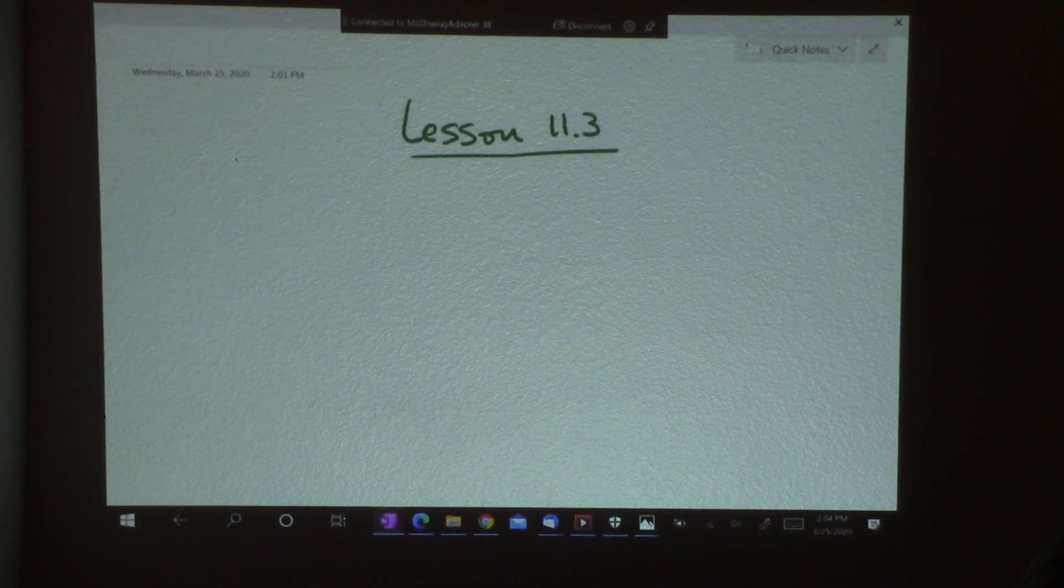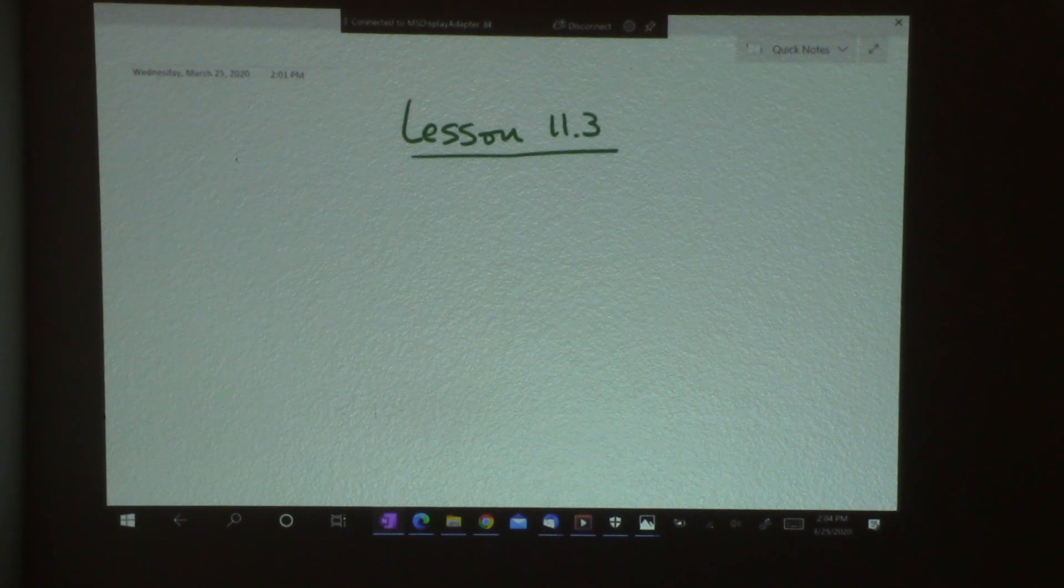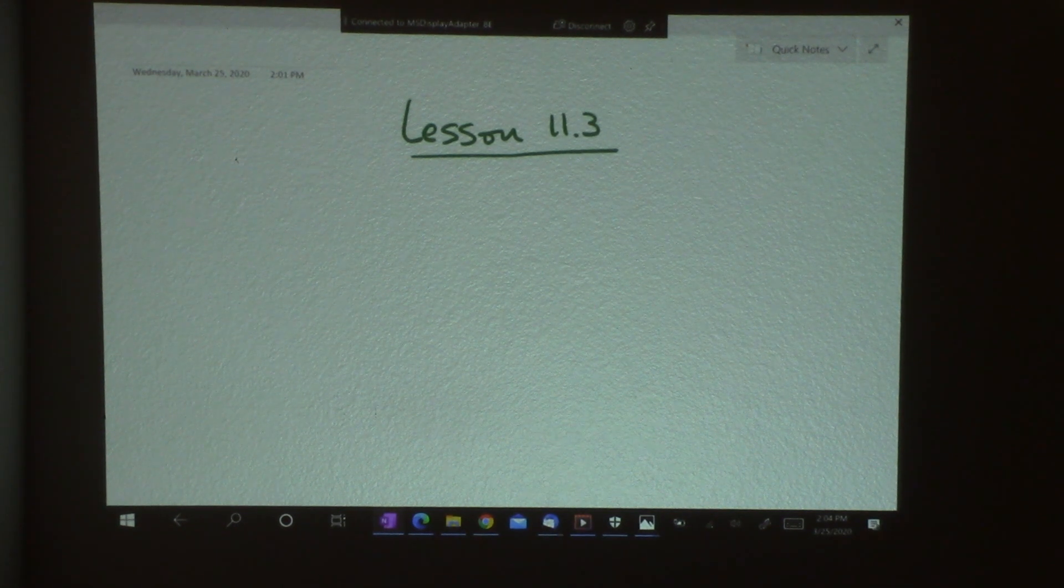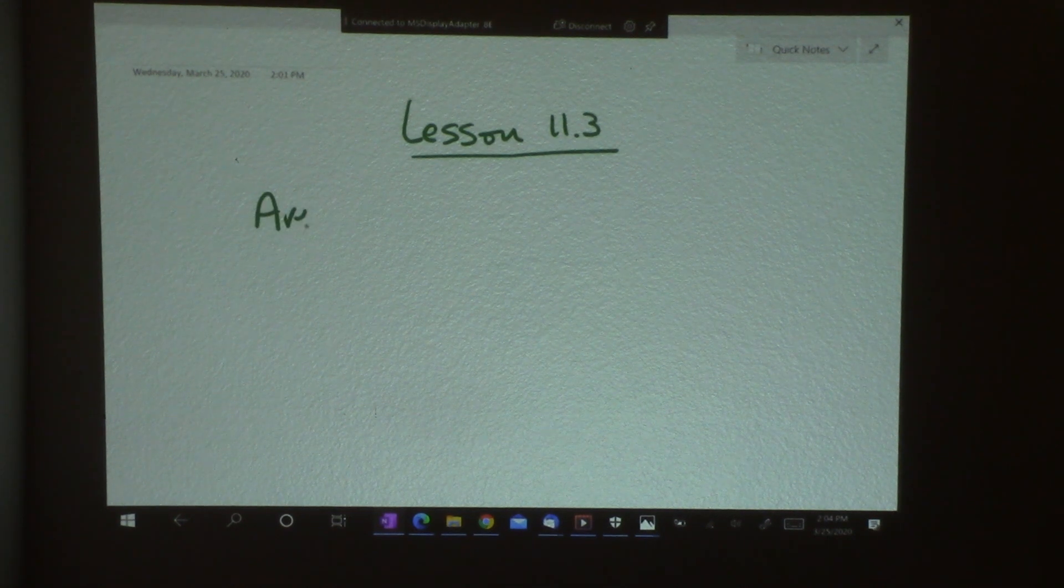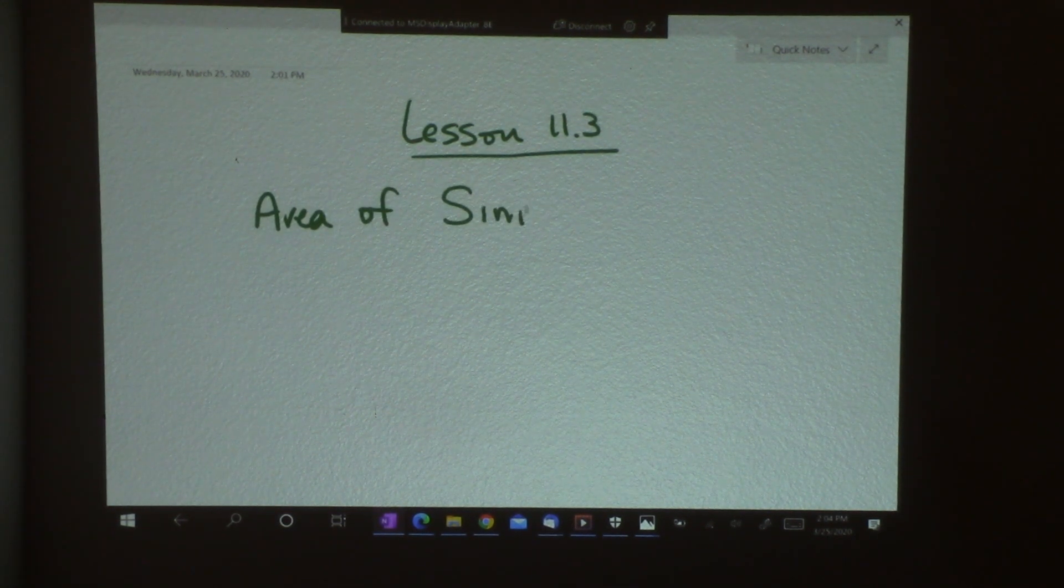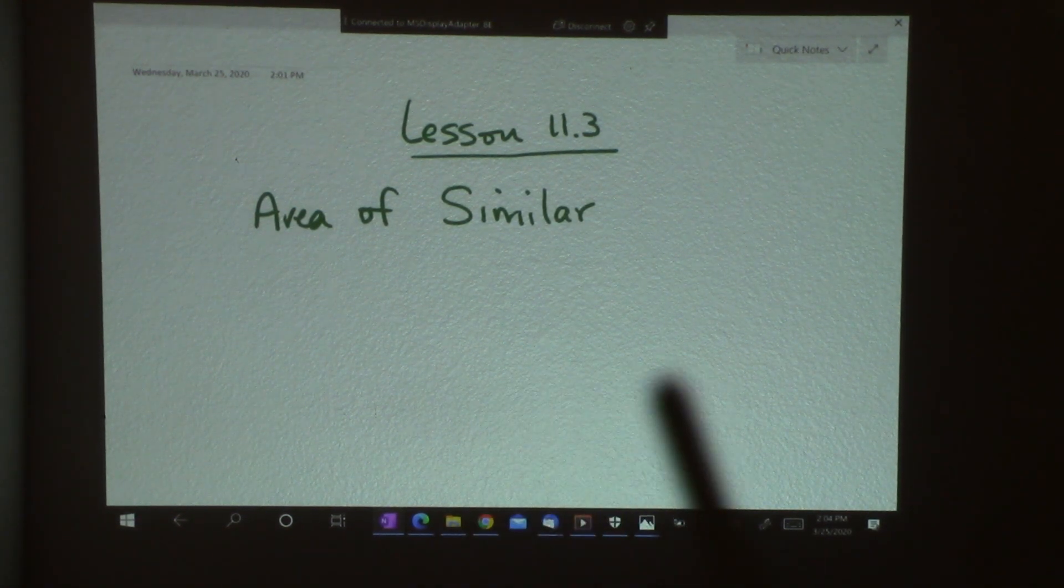Okay, geometry students, I am back with our second lesson, lesson 11.3. So I hope you have a piece of paper out and we can do this together. 11.3 is called Perimeter and Area of Similar Figures.